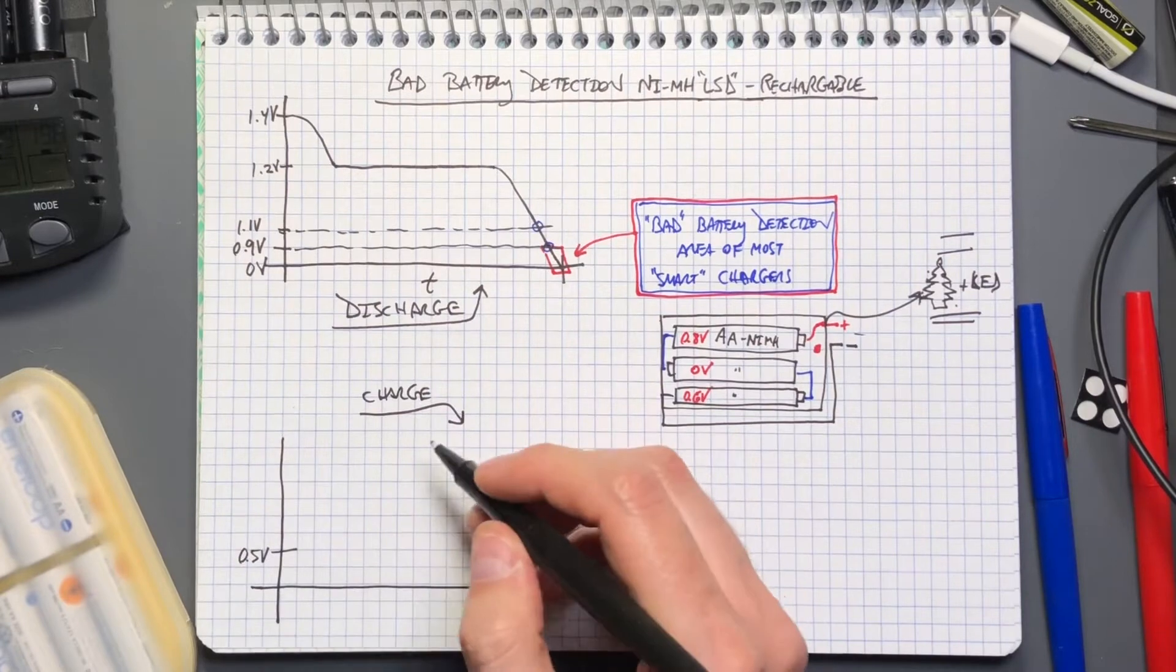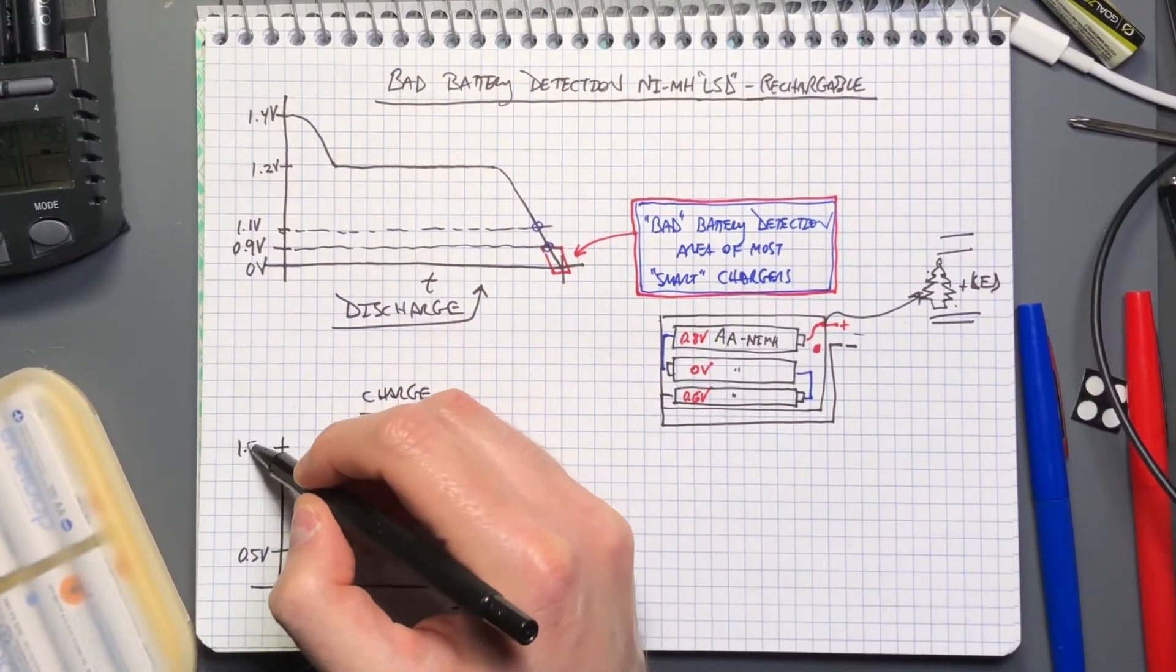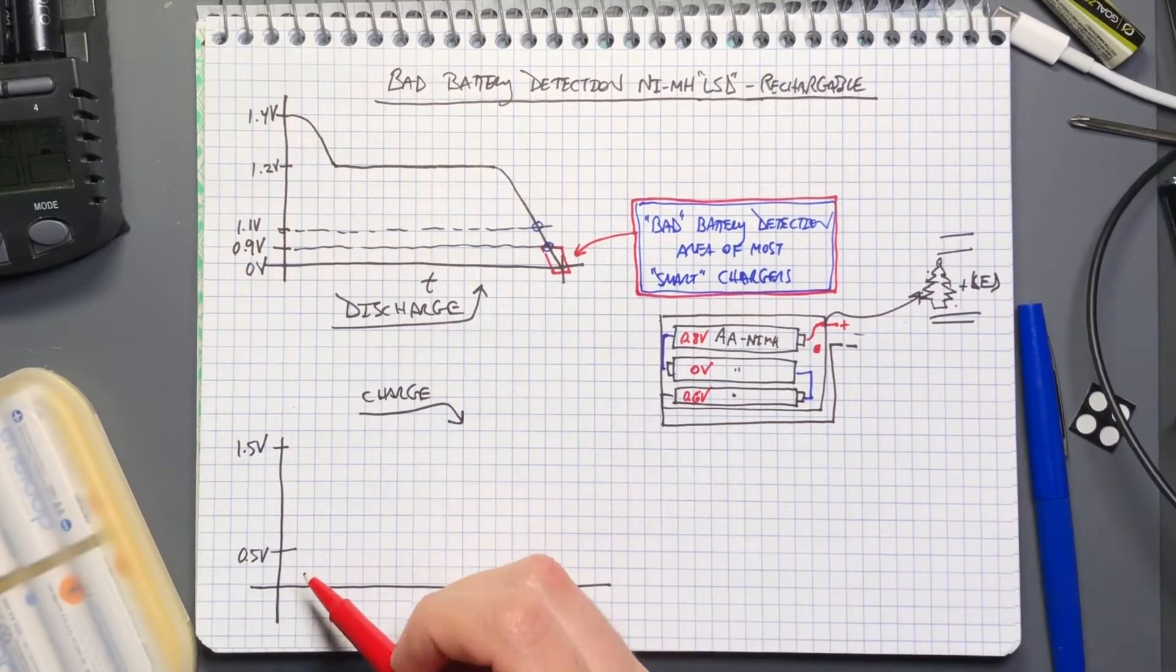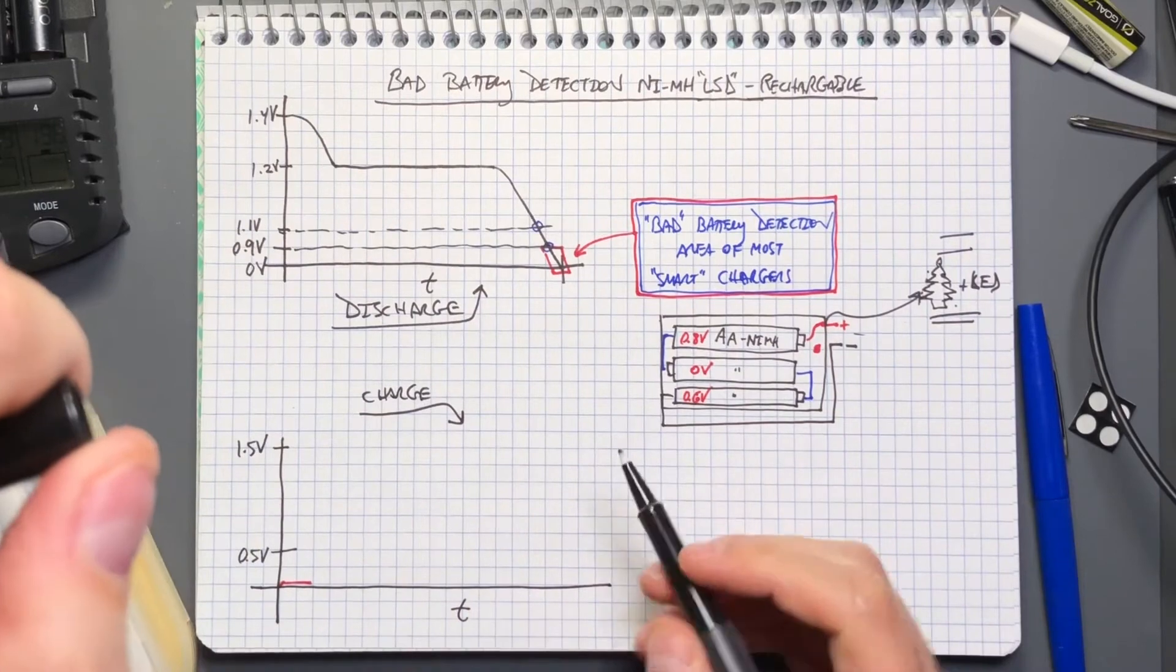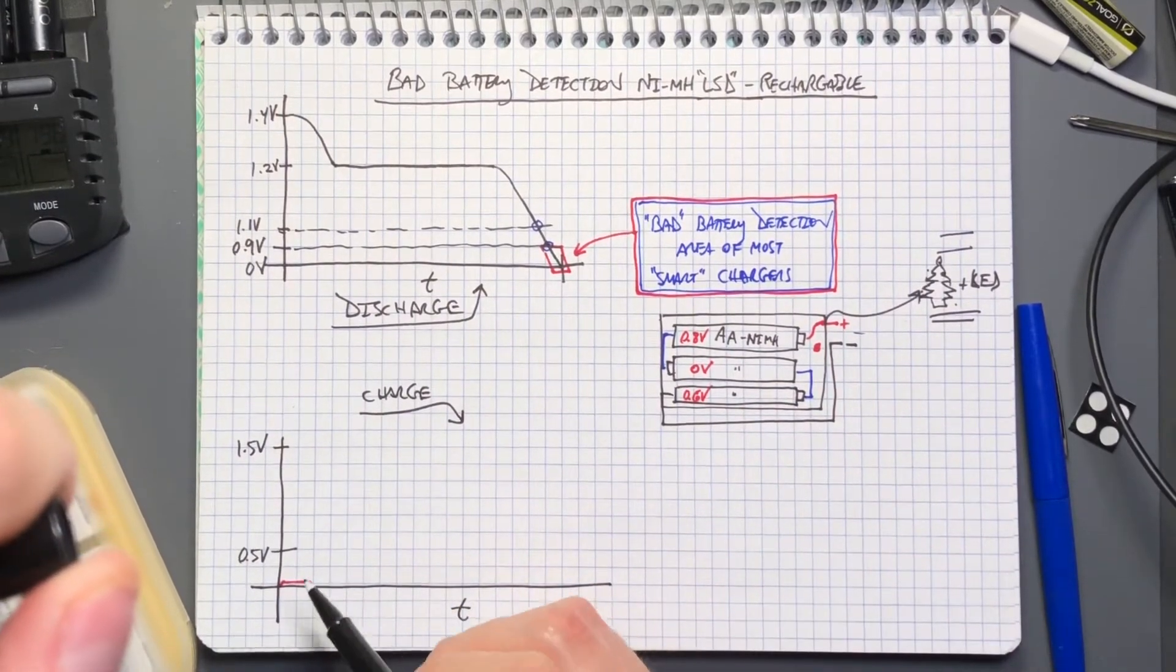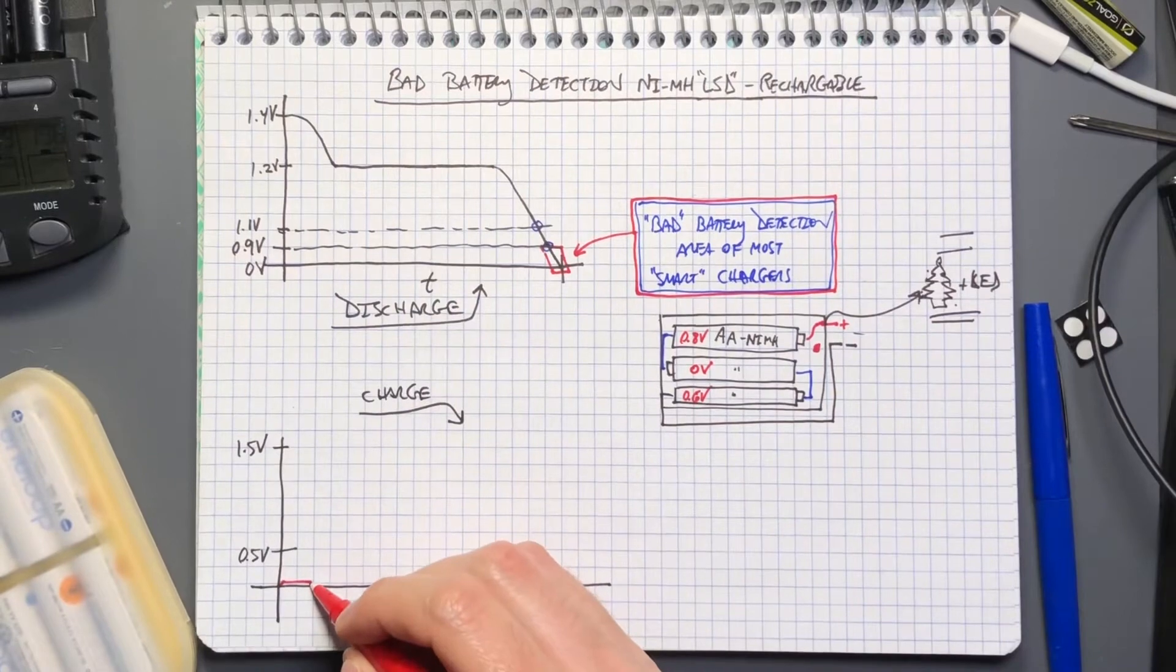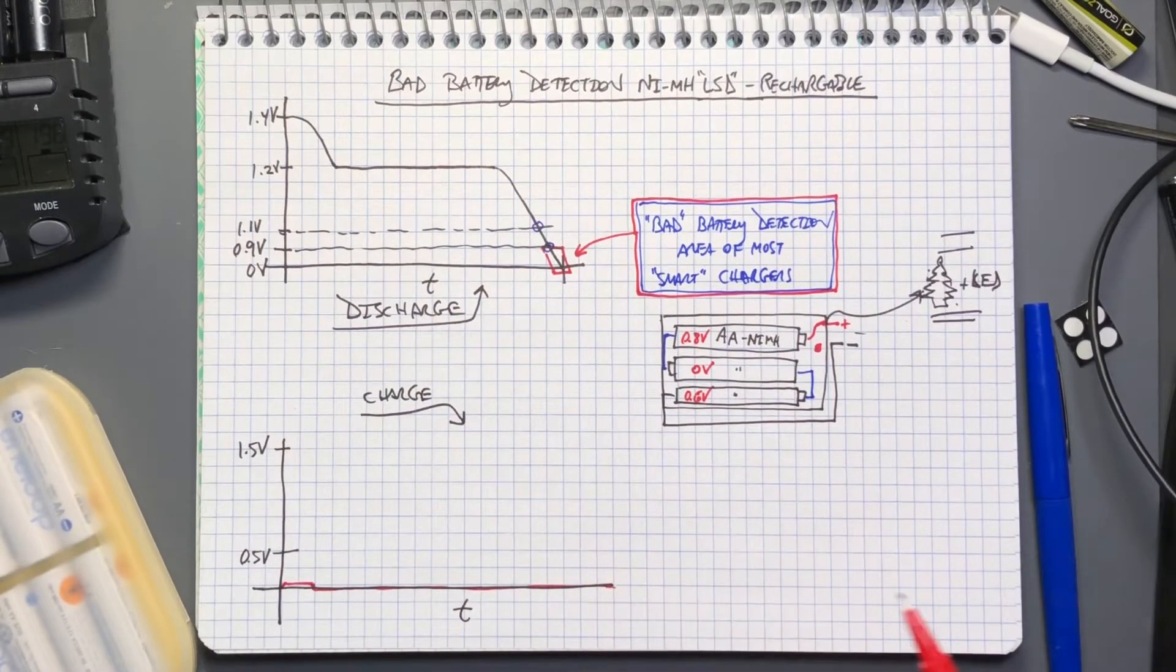If the cell comes in to the charger, we want to get to a charge termination of somewhere around 1.5 volts and the cell starts off at zero volts. The first thing the charger will do is measure the voltage across the cell. If it measures the voltage at 0.0 volts, it doesn't even turn on charging and just goes battery's bad.